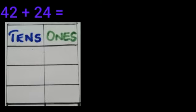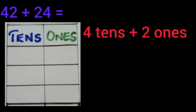So in 42, we know that 4 tens and 2 ones. So in ones column, we should write 2 and in tens column, we should write 4.